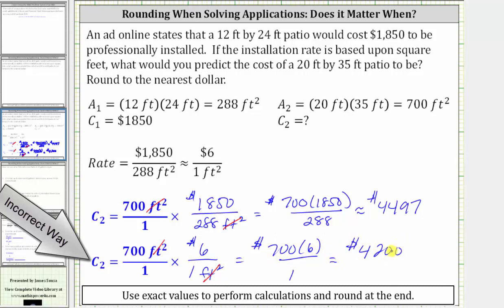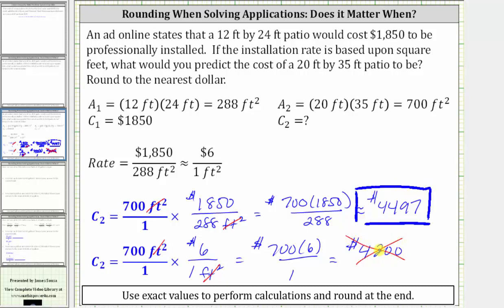So notice how there's quite a big difference in the prediction if we use the exact rate, compared to the rounded rate. So once again, we should use the exact rate, and then round at the very end, which gives us an estimate of $4,497. And again, we don't want to use the estimate of $4,200, because this estimate has too much error. I hope you found this helpful.